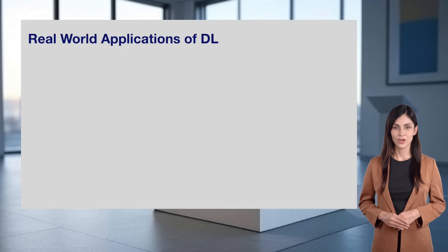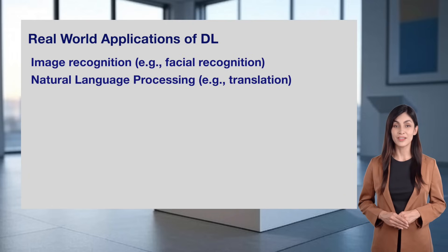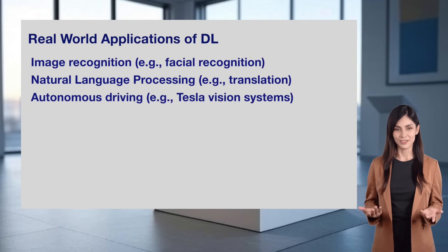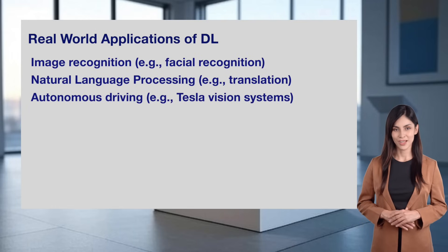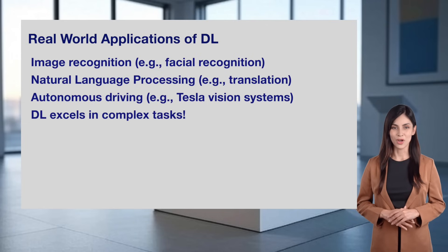Deep learning, on the other hand, excels in more complex tasks. It powers image recognition, like facial recognition to unlock your phone. Natural language processing, such as translating languages, often uses deep learning — think of Google Translate. Autonomous driving, like Tesla's vision systems, also relies on deep learning to process camera data and make decisions. Deep learning is perfect for complex tasks that need lots of data and power.